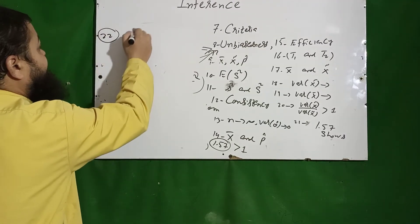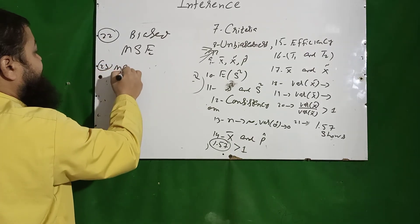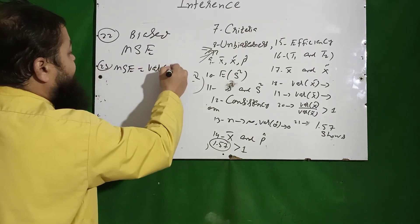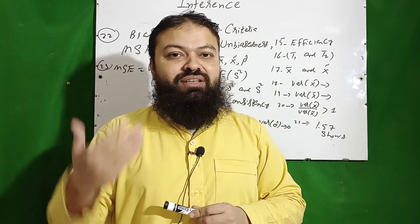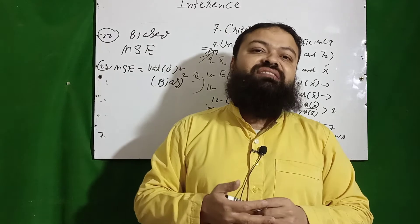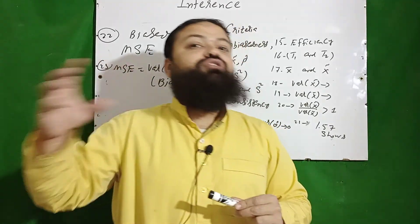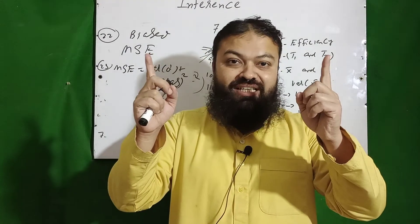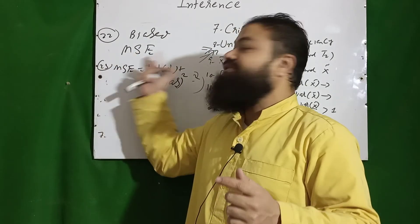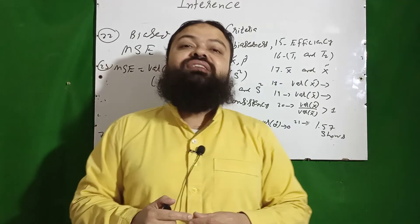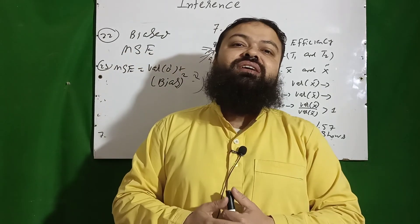If we have two biased estimators and want to check efficiency, we calculate the Mean Square Error (MSE). The formula is: MSE = Var(θ-cap) + (bias)². When estimators are biased — meaning E(estimator) ≠ population parameter — we compare their MSEs to determine which is more efficient. Please comment on today's lecture. Assalamu Alaikum.